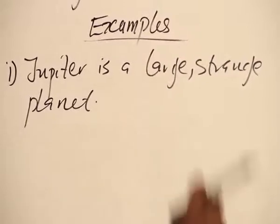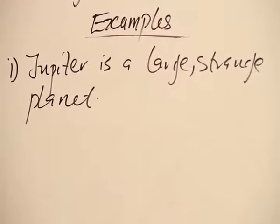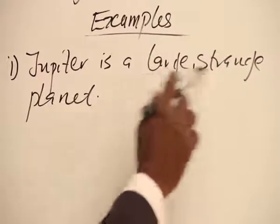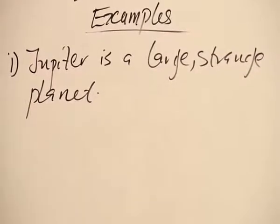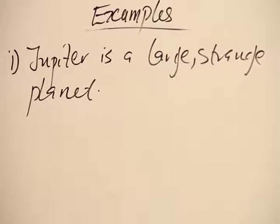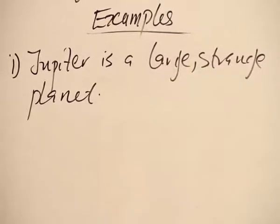Large is an adjective. Strange is an adjective. So, you can't just use the two before planet without the use of a comma. We use a comma to separate them.